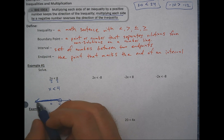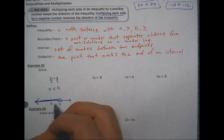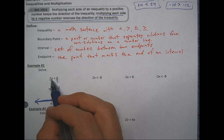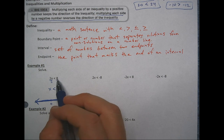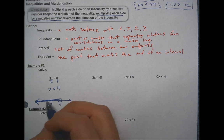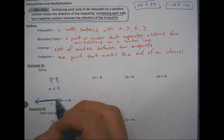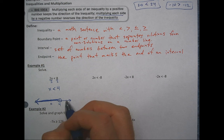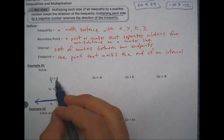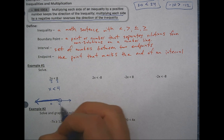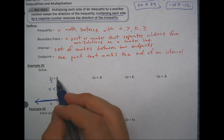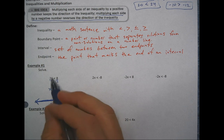To verify: plug in zero, which should be in the solution set. Two times zero is zero — is zero less than eight? Yes. If you plug in five, a number outside the solution set, five times two is 10, and 10 is not less than eight, so it doesn't work. And four itself: four times two is eight, and eight is not less than eight, so four is not included. Anything less than four makes this true.